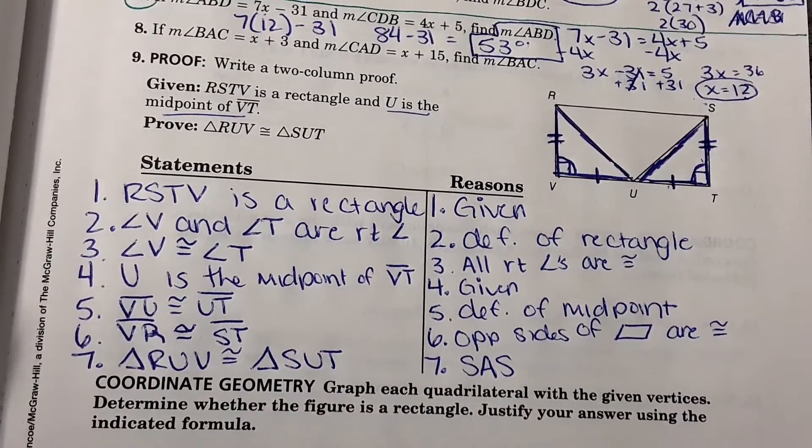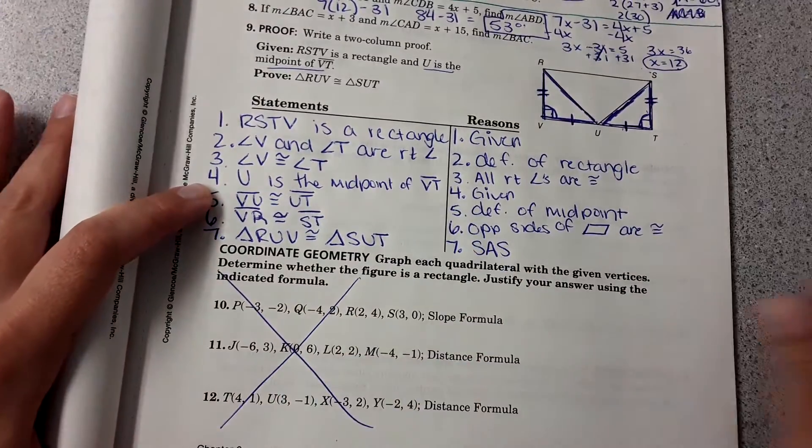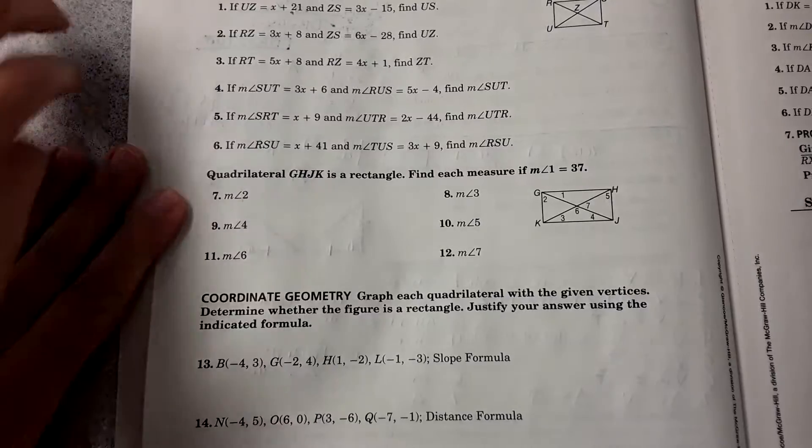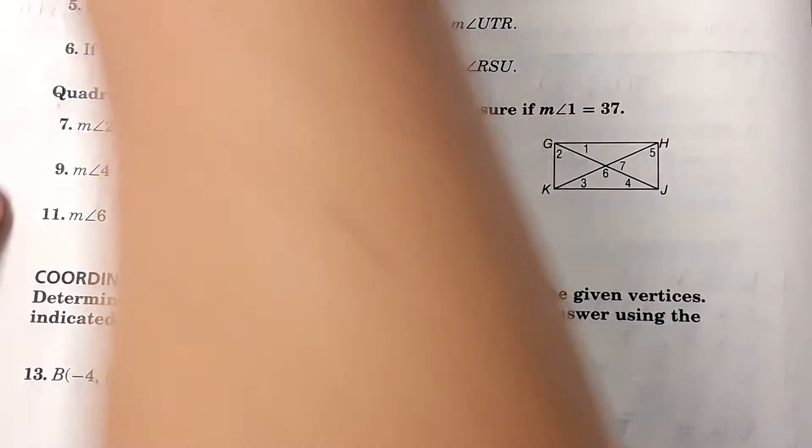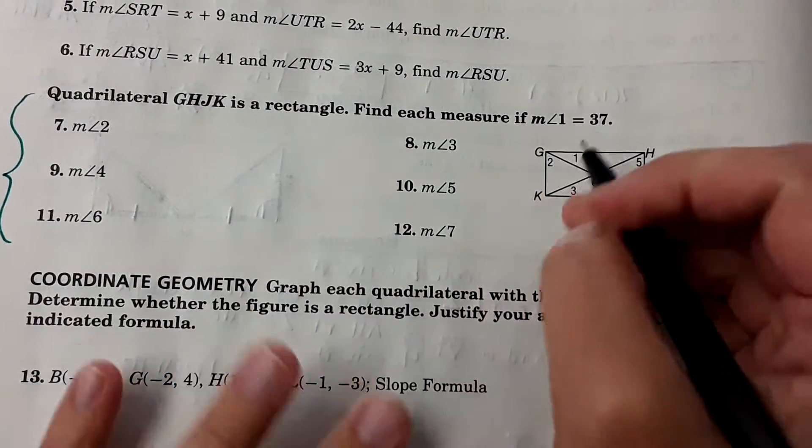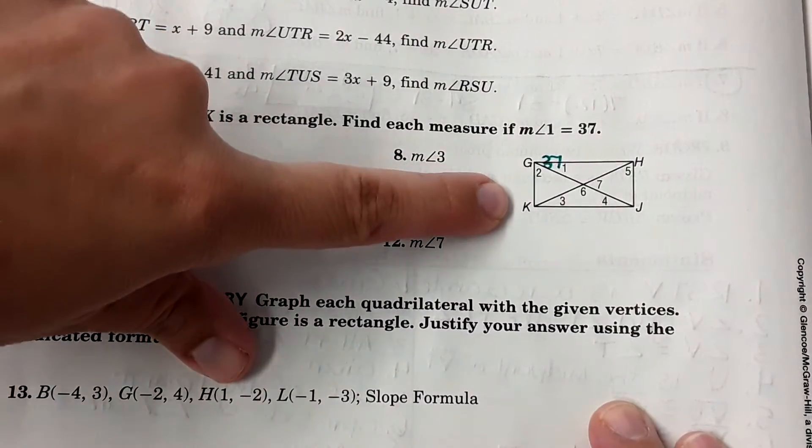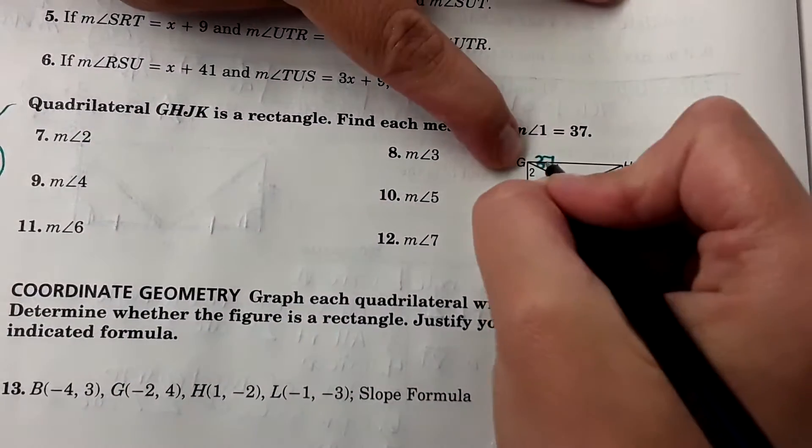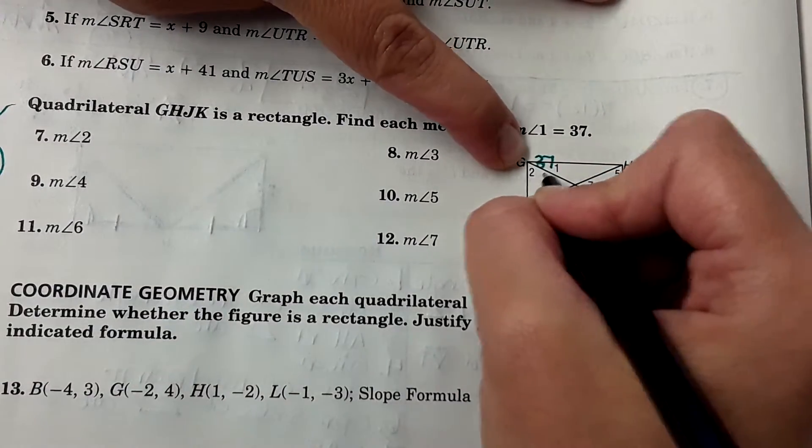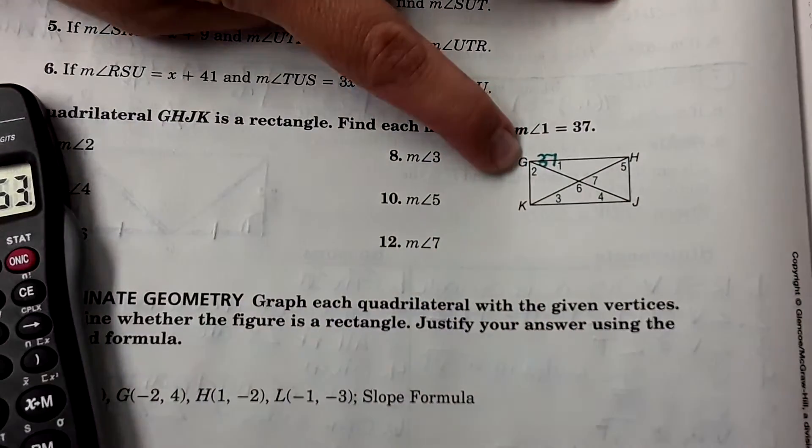Okay. So let's do one section on the back. So flip over the workbook to the back page. You can cross this out here. And we're going to look at 7 through 12 on the back. So here it's saying quadrilateral GHJK is a rectangle. Find each measure if measure of angle 1 is 37 degrees. Okay. Before I go through each individual angle, let's just look at this over here and fill in the angle measures. We're told this is a rectangle, so these two angles must add to 90 degrees. So I'm going to do 90 minus 37 to get 53 degrees.